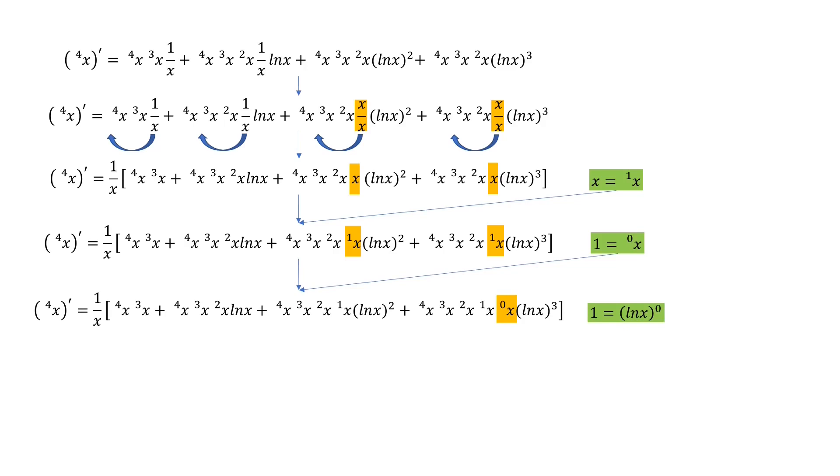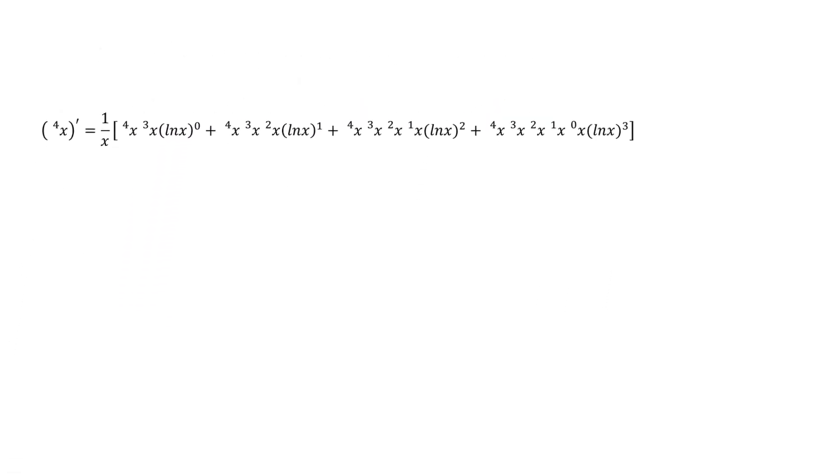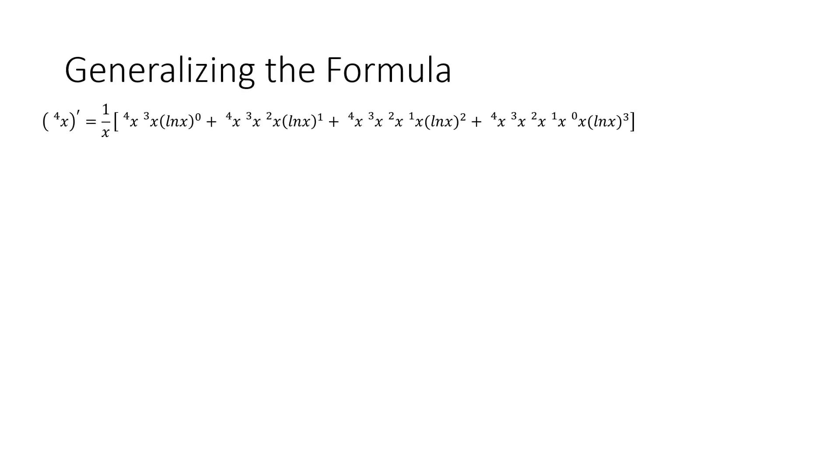0 to the 0 is undefined. And so in this case, L and x cannot be 0. And therefore x cannot be 1. Duly noted. I'll get back to that. But for now, please just go with it. And there we go. We did it. I hope you can see a clear pattern emerging.